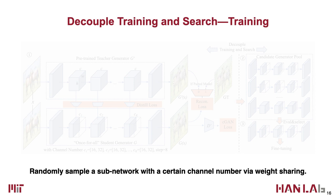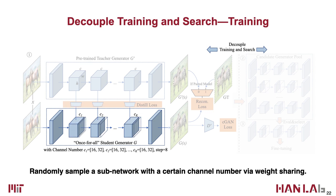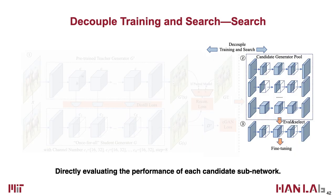We first train a once-for-all network that supports different channel numbers via weight sharing. At each training step, we randomly sample a sub-network with a certain channel number configuration, compute the output and update the extracted weights using our learning objective. In this way, each sub-network with different numbers of channels is equally trained and can operate independently. After the once-for-all network is trained, we find the best sub-network by directly evaluating each candidate on the validation set. Since the network is thoroughly trained with weight sharing, no fine-tuning is needed. This approximates the model performance when trained from scratch, allowing us to decouple the training and search of the generator architecture — we only need to train once, then pick the best sub-network without further training.